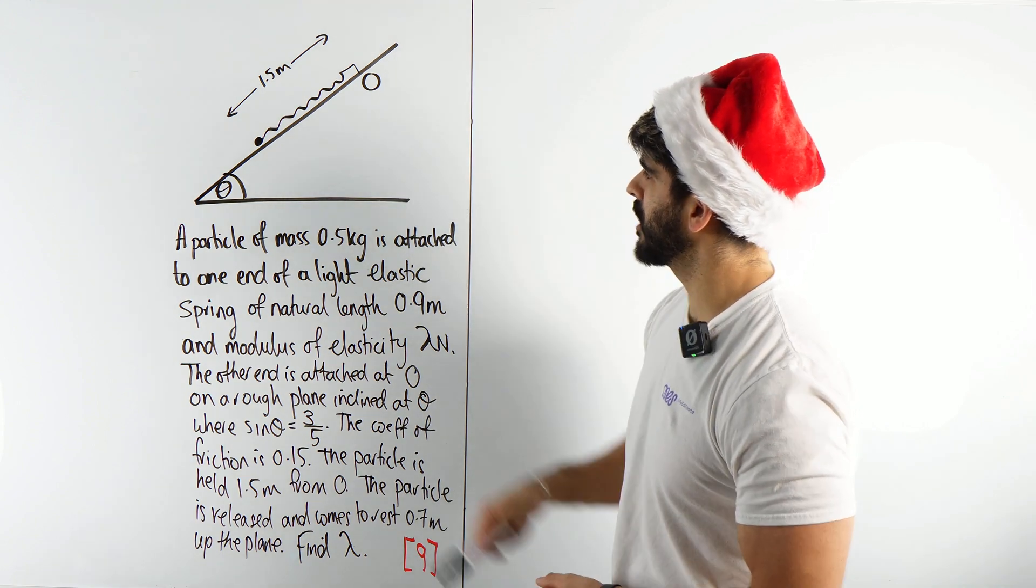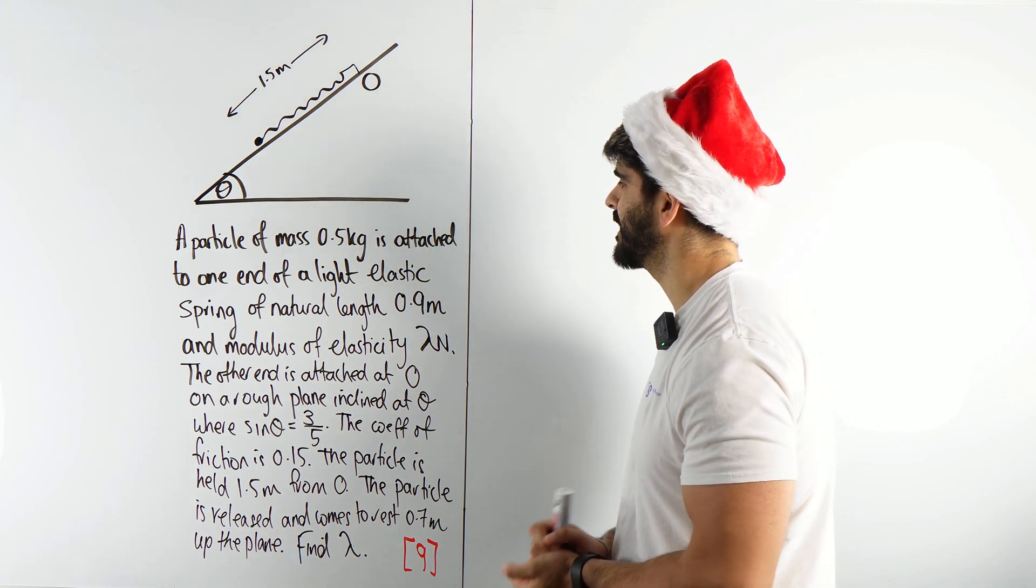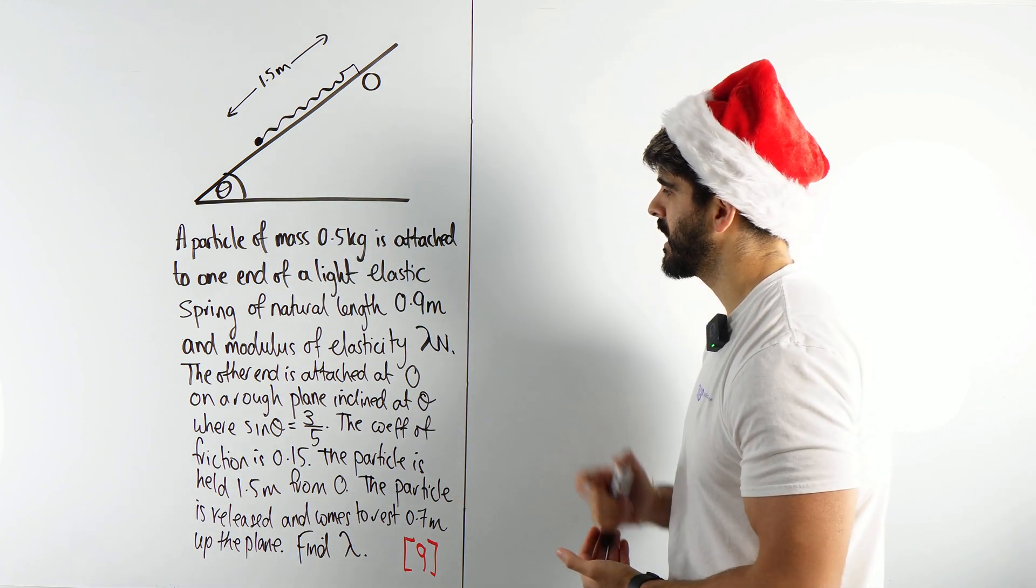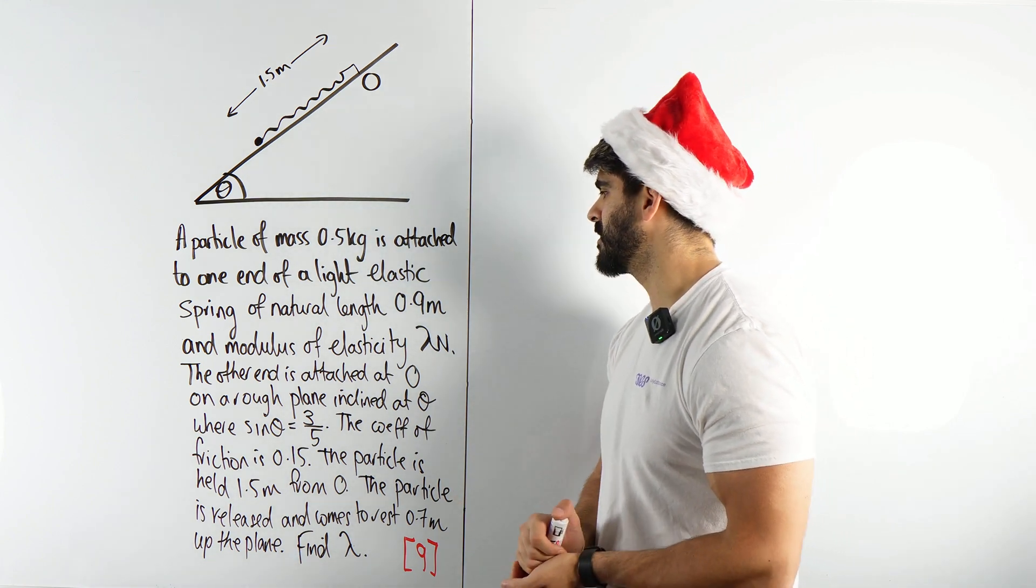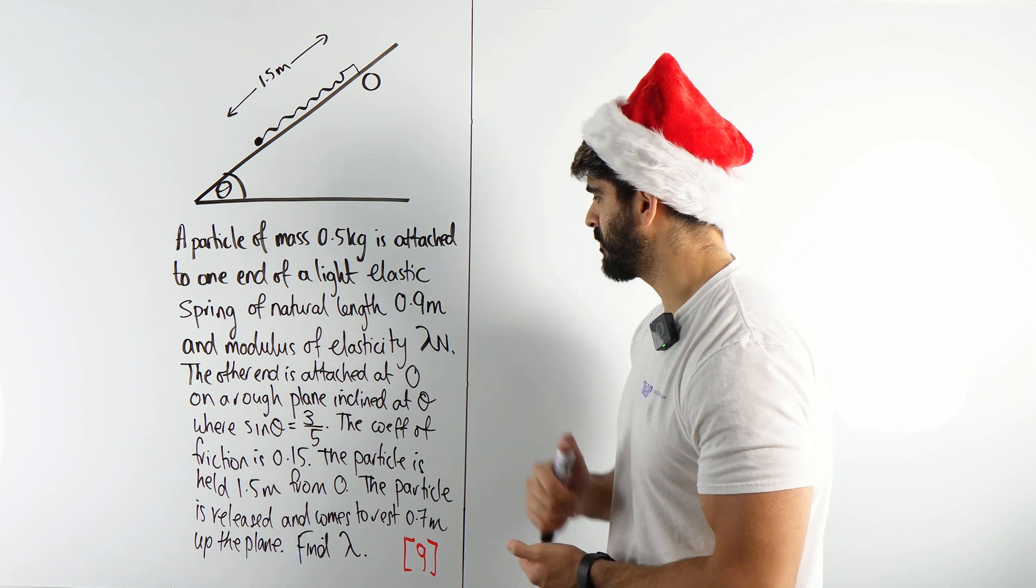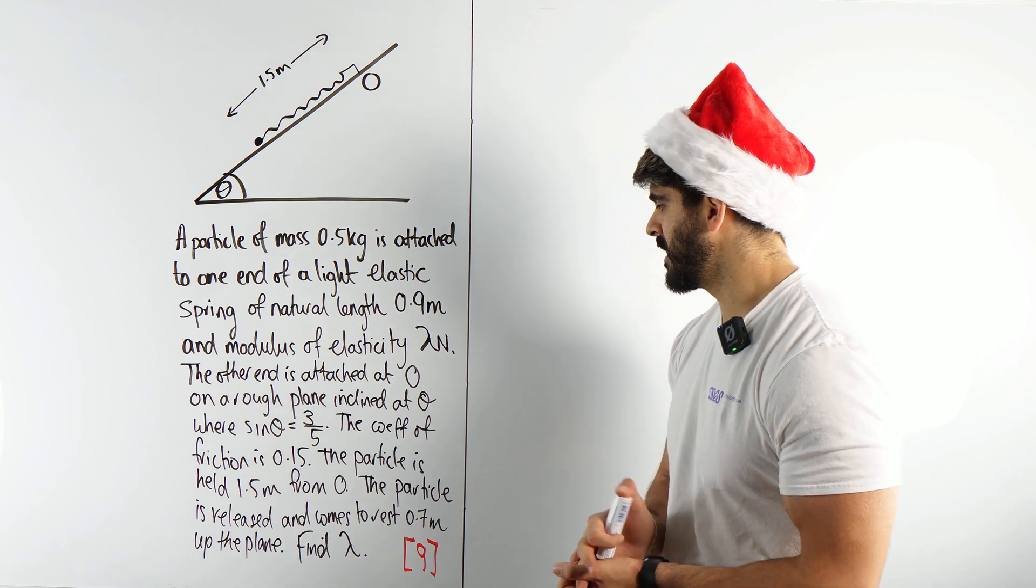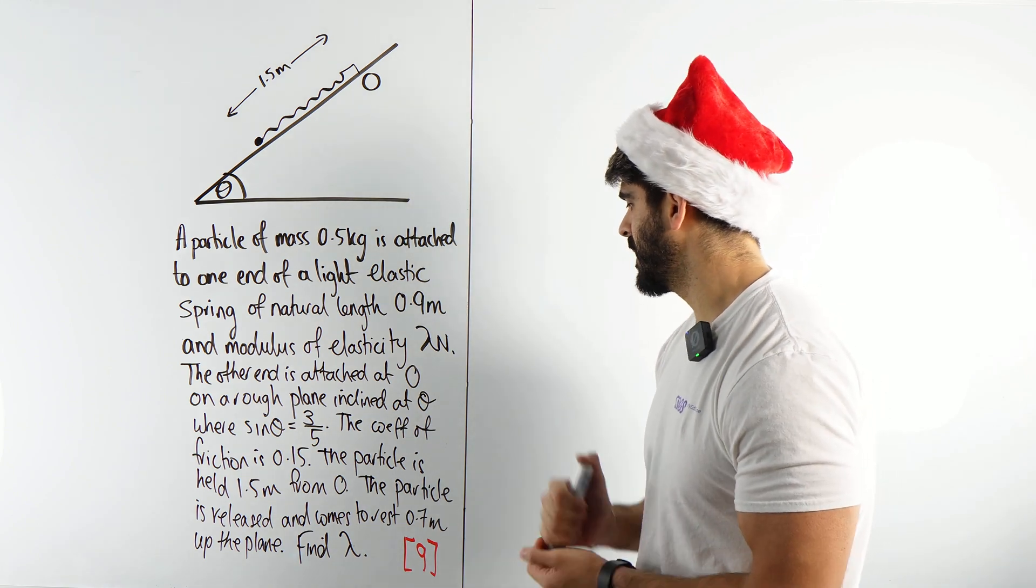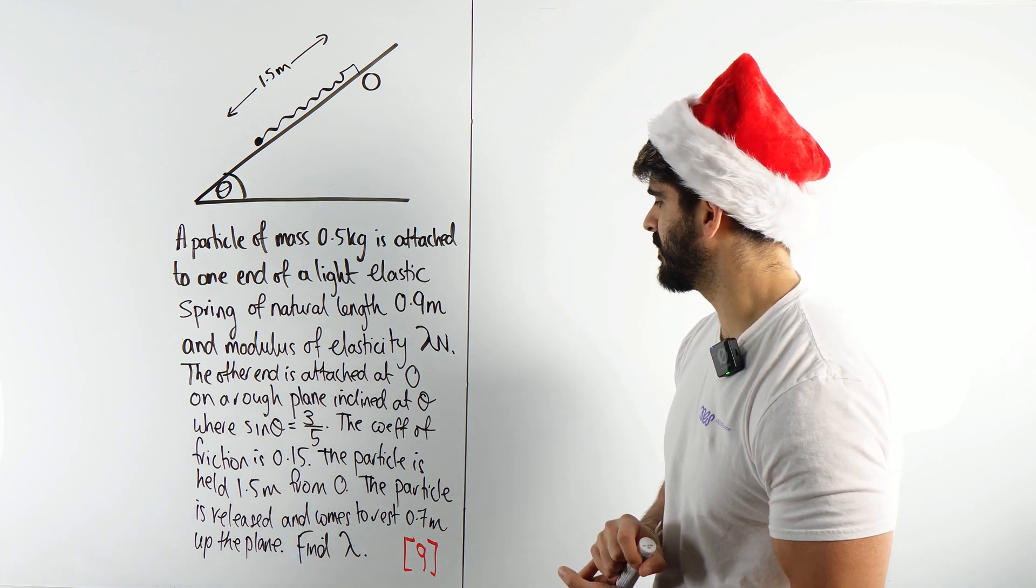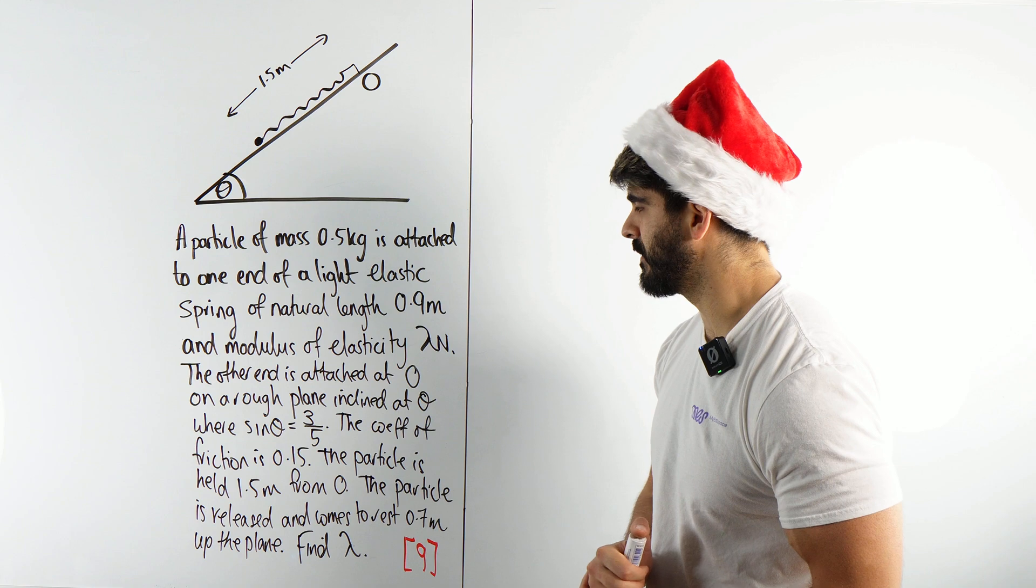We've got a particle of mass 0.5 kg attached to one end of a light elastic spring of natural length 0.9 meters and modulus of elasticity lambda newtons. The other end is attached at O on a rough plane inclined at theta where sin theta is three fifths. The coefficient of friction is 0.15. The particle is held 1.5 meters from O, then released and comes to rest 0.7 meters up the plane. Find the value of lambda.